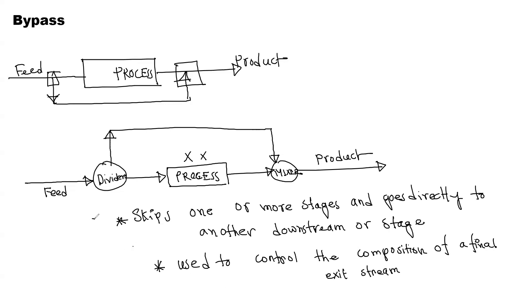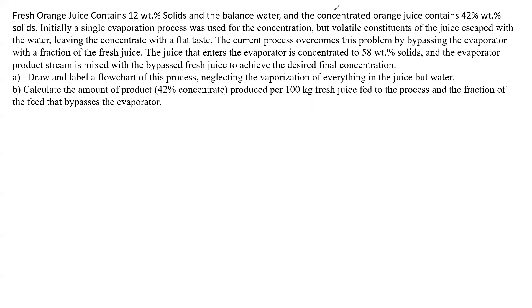How do we do this? A divider is used to split the feed — the divider mixes the product and the bypass stream. This is the bypass related method.